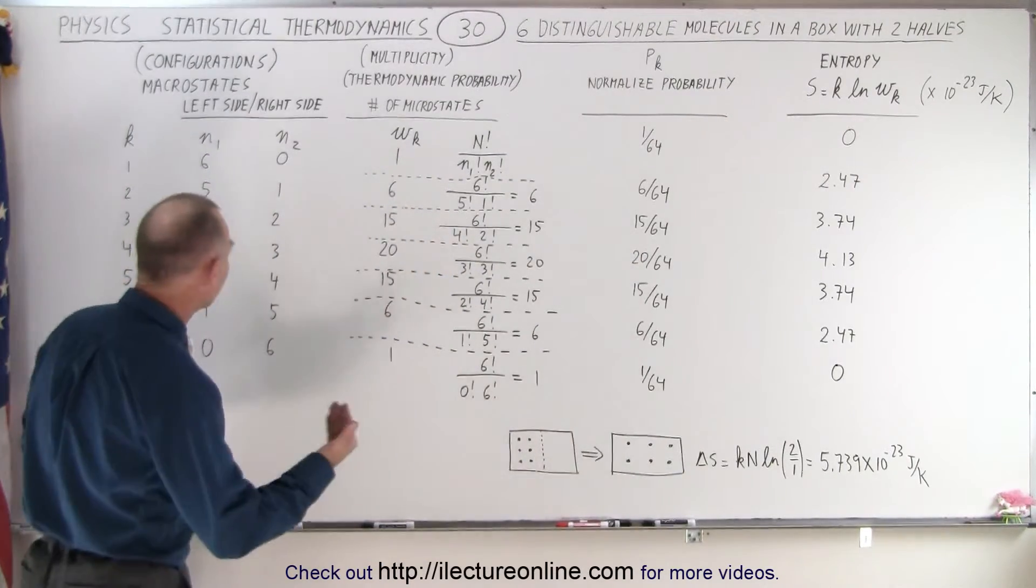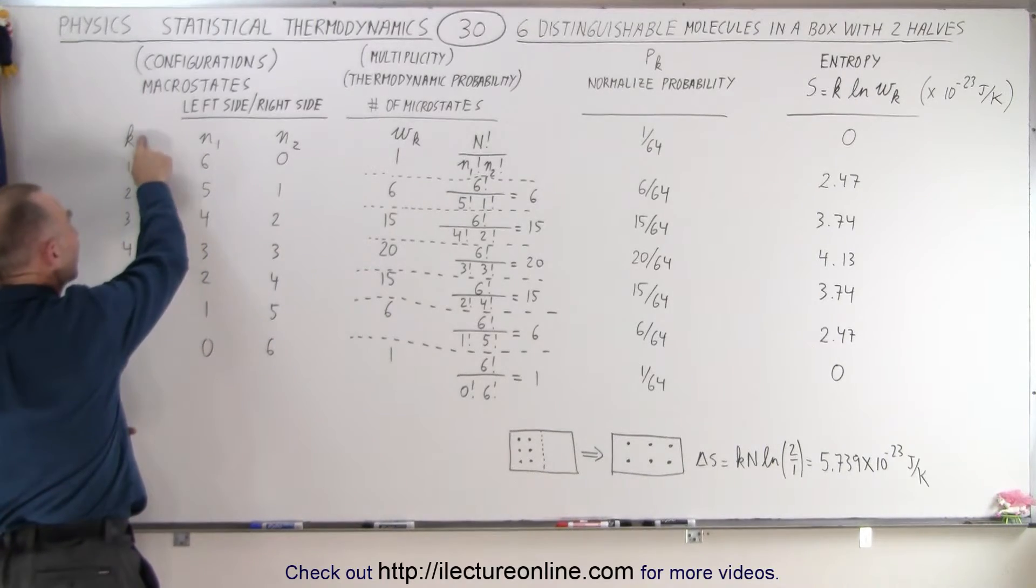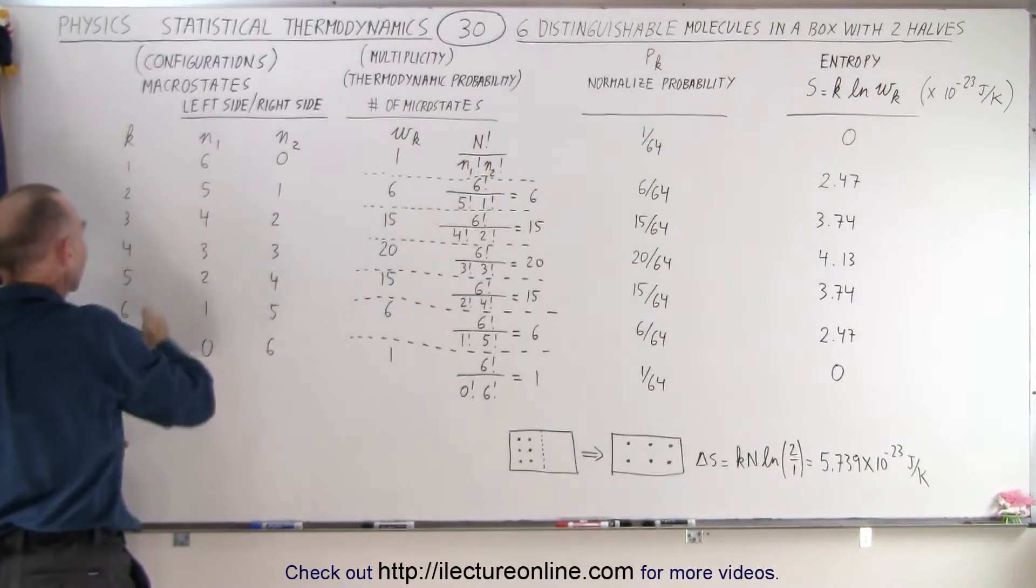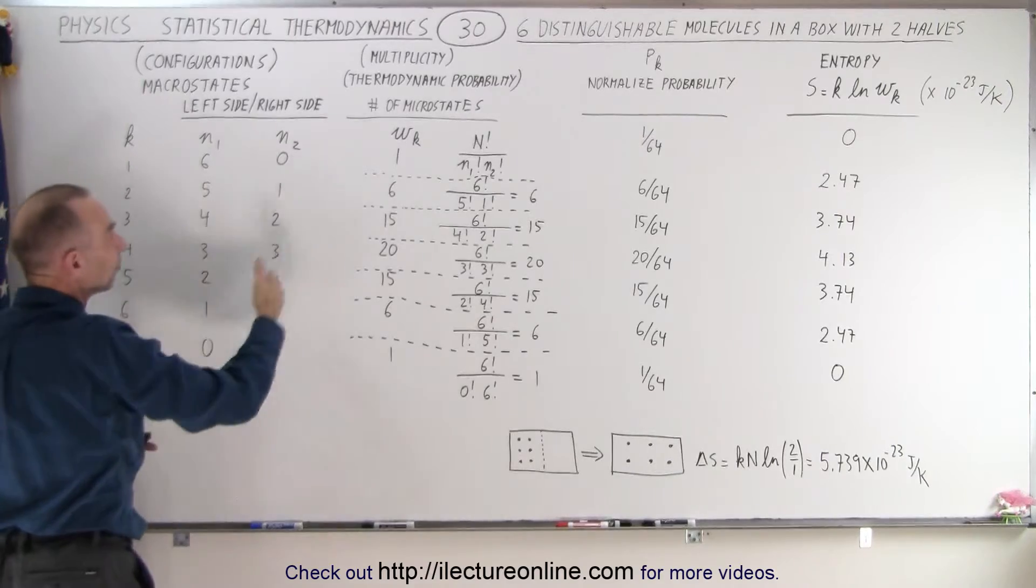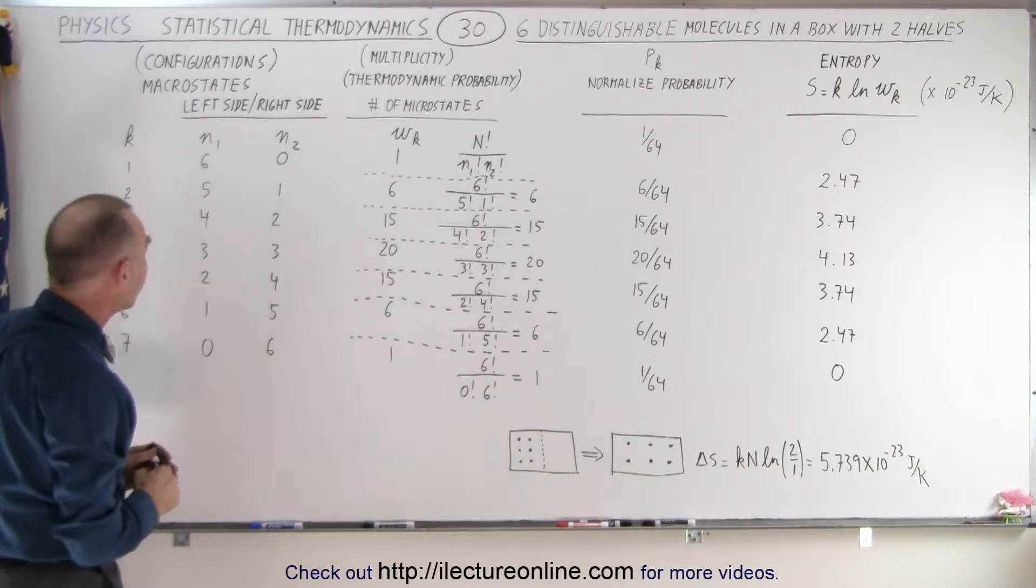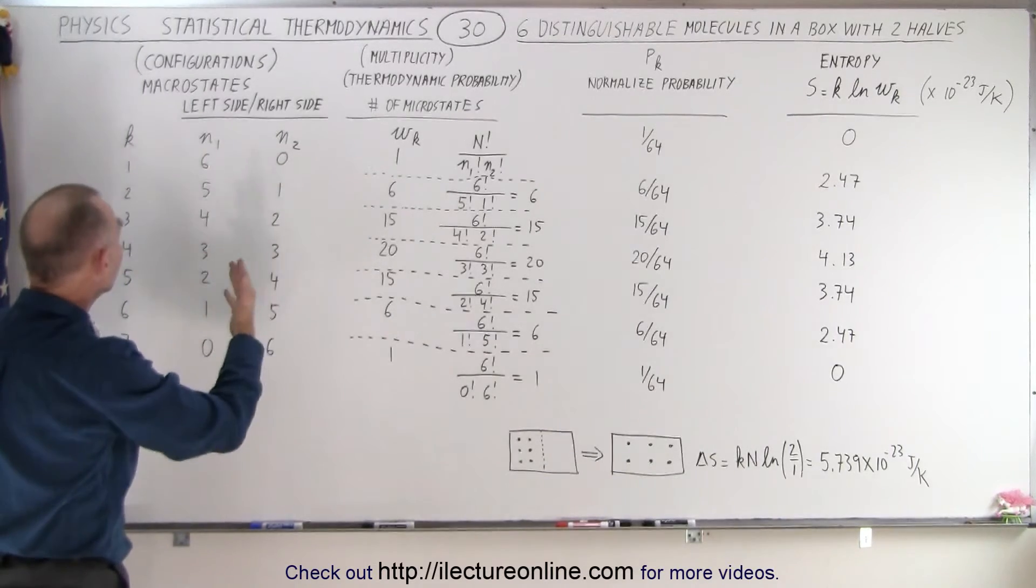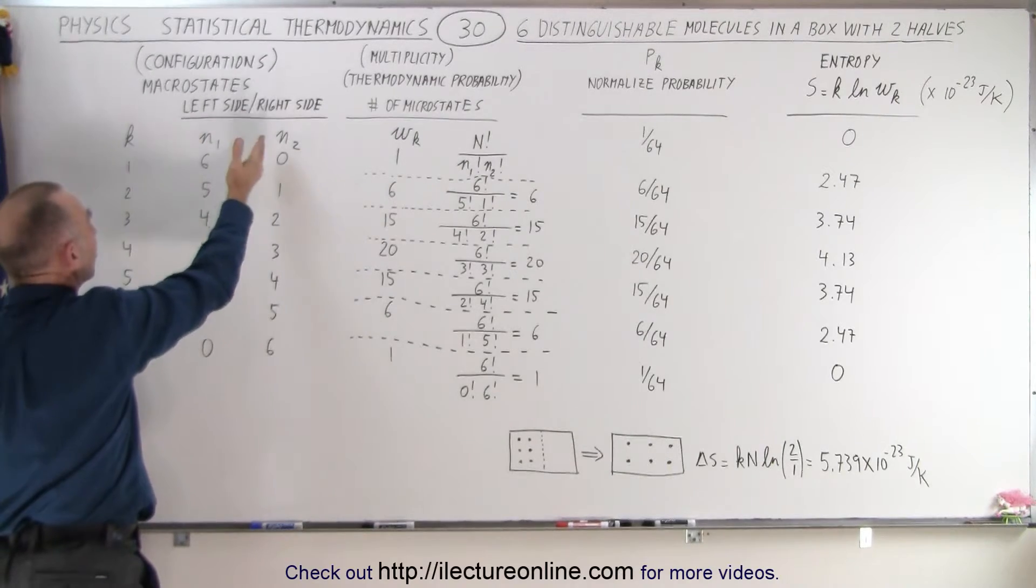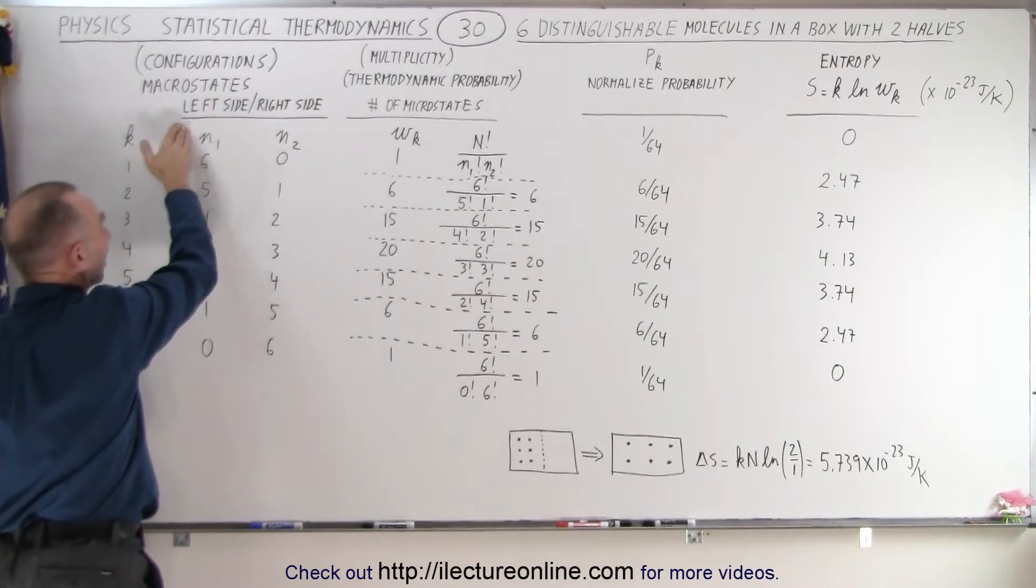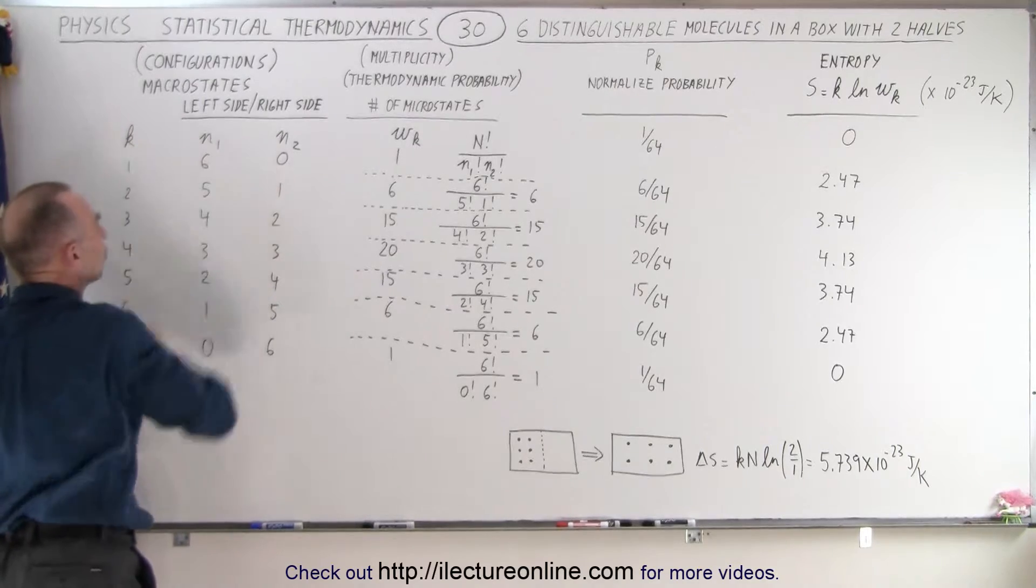So now when we take a look at the table that we set up, notice that we unfortunately use the same letter k to indicate what macrostate we're in versus k in the Boltzmann's constant, so don't get those two confused. But notice that we can consider the number of macrostates as the number of various configurations. We have the number of molecules on the left side, the number of molecules on the right side, we can indicate them by N1 and N2.